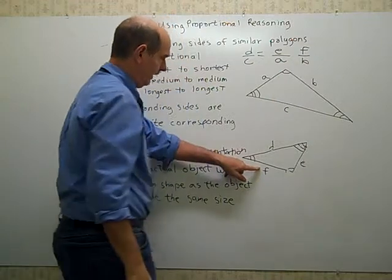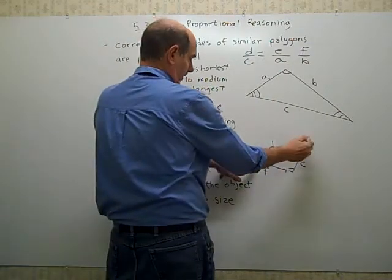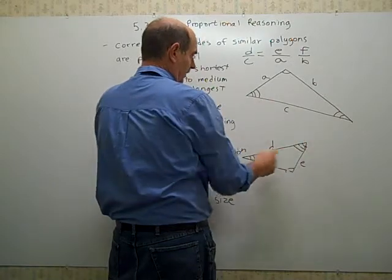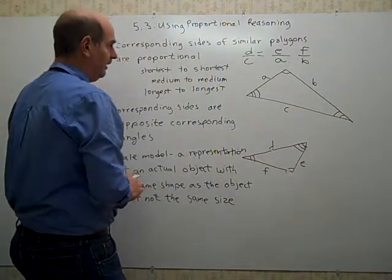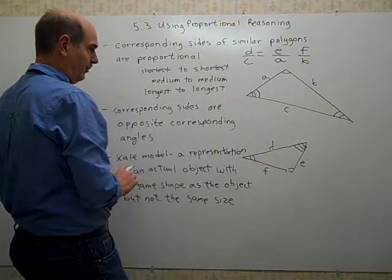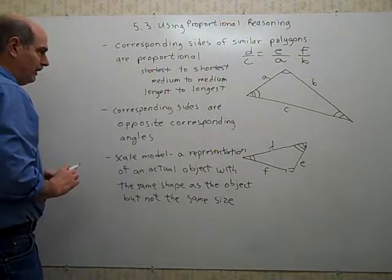Because that is opposite the angle with the three marks, and also is the middle side. Yeah, the middle side. That's the middle length.